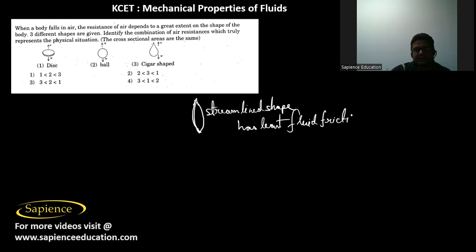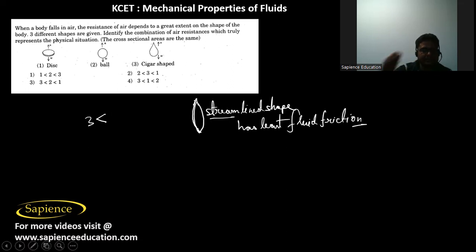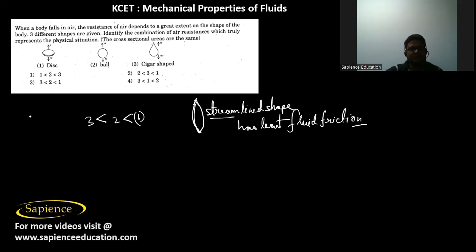The cigar shape is closest to the streamline shape, so it will have the least air resistance. The disc will have the highest air resistance. So the order is: resistance of disc > sphere > cigar, which gives option 3 as the correct answer.